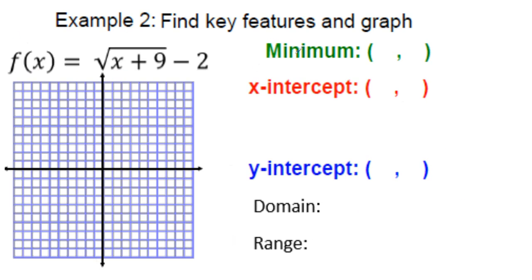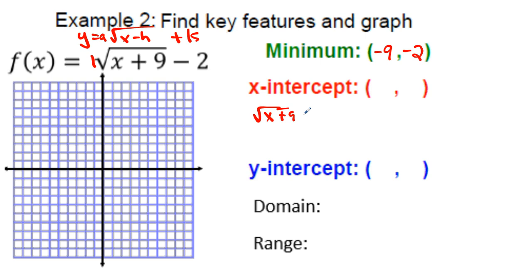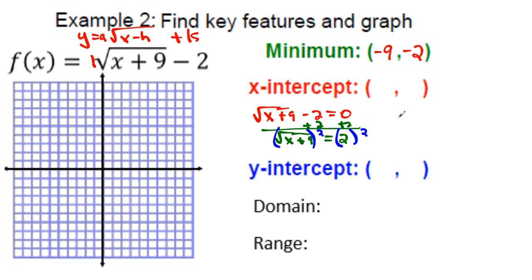Example 2. Writing our general form: y = a√(x − h) + k. The a value is positive so it opens upward. h is the opposite of what's inside, so h = −9 (not positive 9). k = −2. The vertex is (−9, −2). To find the x-intercept, set y = 0 and solve: add 2 to both sides to get √(x + 9) = 2.